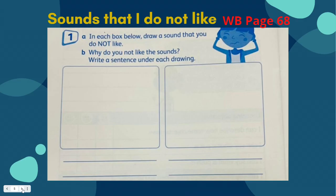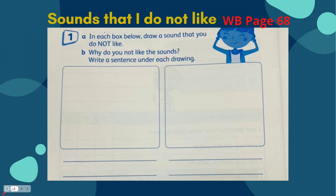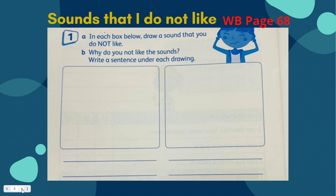Now let's complete our workbook page 68: Sounds that I do not like. In each box below, draw a sound that you do not like and write a sentence why you do not like the sounds. This exercise will build up your sense of hearing observation, as well as your vocabulary and grammar. Just look around you — inside your house or outside, like in your community, in your school, everywhere — where you can find sources of sound.